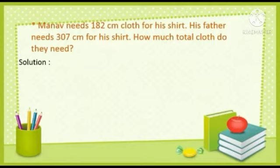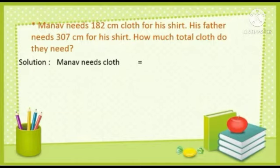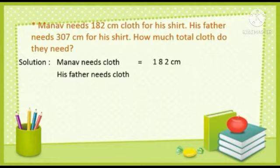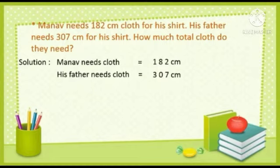Let us find the solution. We will start by writing the statements. Manav needs cloth equals 182 cm. His father needs cloth equals 307 cm. The question asks how much total cloth do they need. The magic word here is 'total,' which tells us that we have to do addition.